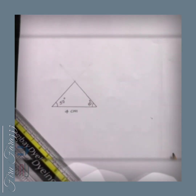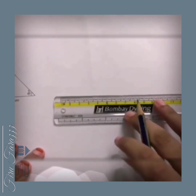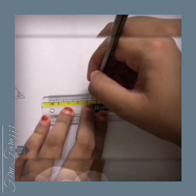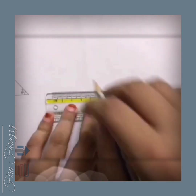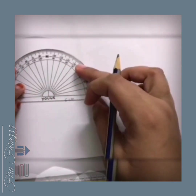Here we have the specified figure. In the next figure, the given measurements are 1 side and 2 angles. The side is 5cm and the 2 angles are 90 degrees and 30 degrees. First we have to draw a straight line of length 5cm.